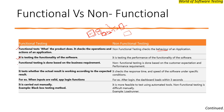The third difference: functional testing is based on the business requirement. There is a Business Requirements Document which is converted into an SRS document. All functionalities are described in the SRS document, and based on that, test cases are written and developers code the application.